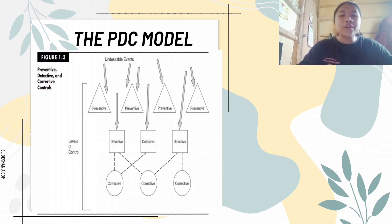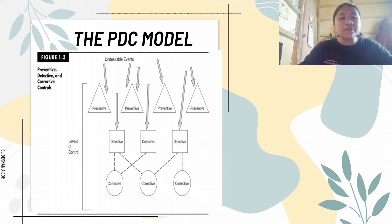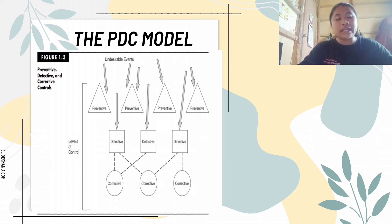Preventive controls are the first line of defense in the control structure. These are strategies used passively to limit the incidence of unfavorable events. They compel adherence to desired or specified actions, thereby filtering out anomalous events. The vast majority of unpleasant outcomes can be prevented at this level. An example of a preventive control is a well-designed data entry screen where the logical structure allows only specific data entry such as the customer's name, address, and items sold.